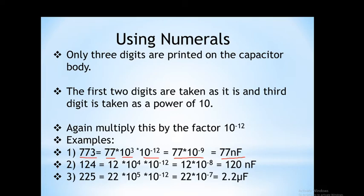For the second example, 124: the first two digits 1 and 2 are the significant digits, and the third digit 4 is the multiplier, giving 10 to the power 4. Multiplying by 10 to the power minus 12, the resultant is 12 into 10 to the power minus 8, which converts to 120 nanofarad. Similarly, for 225, the final value is 2.2 microfarad.